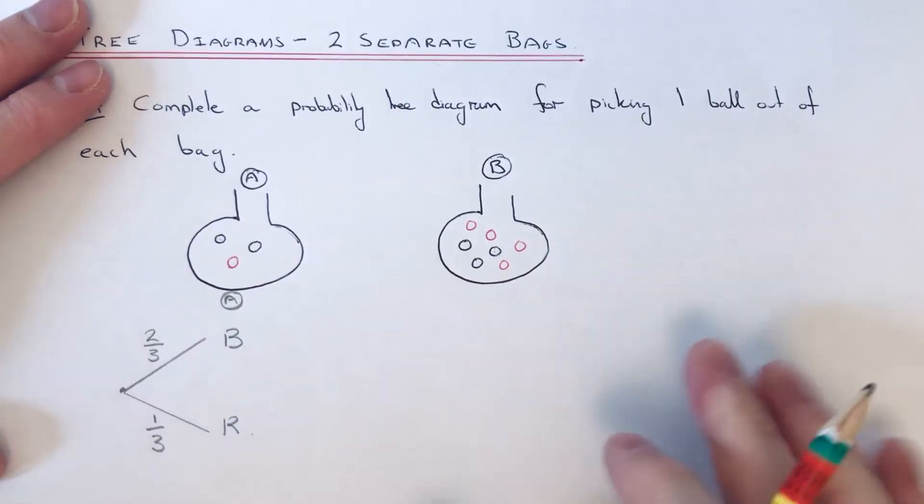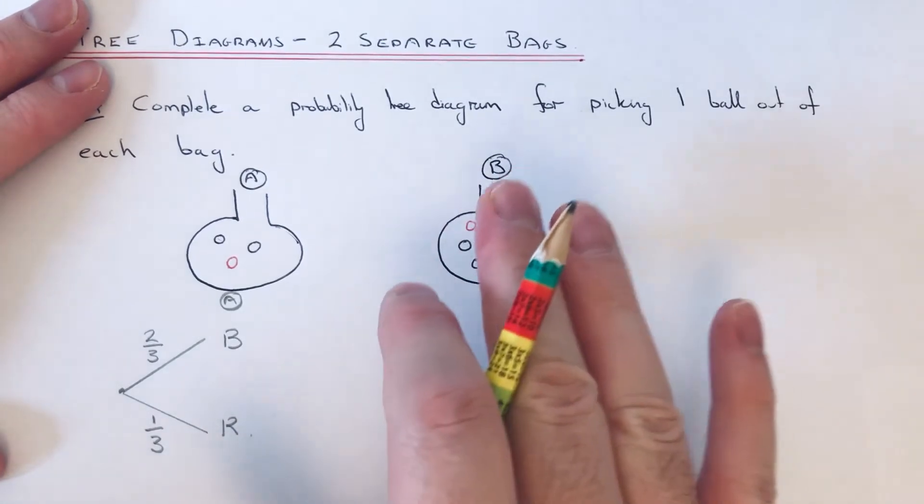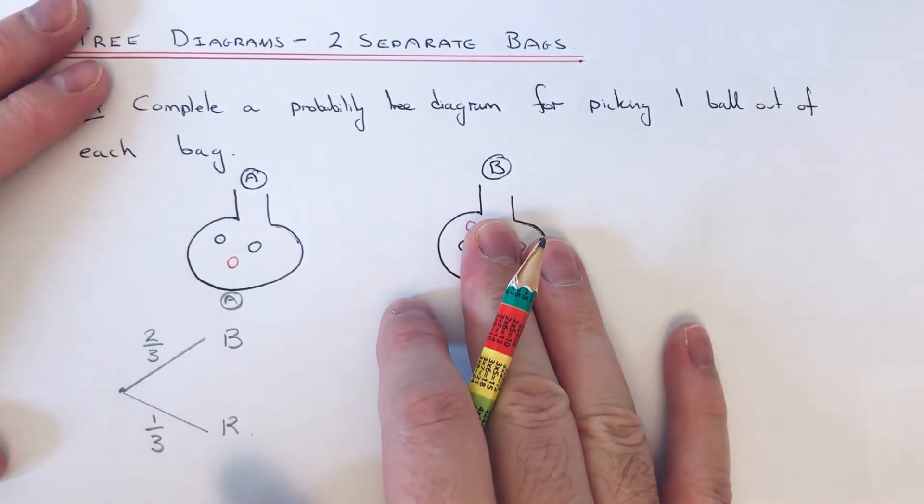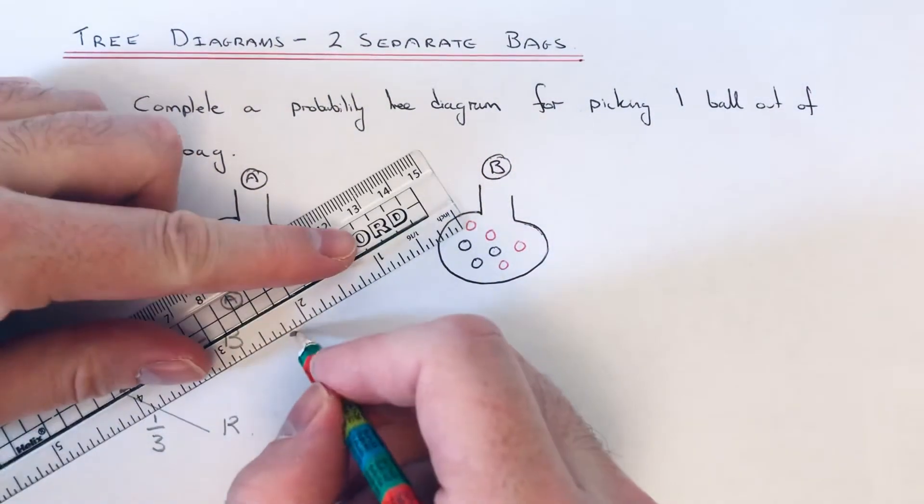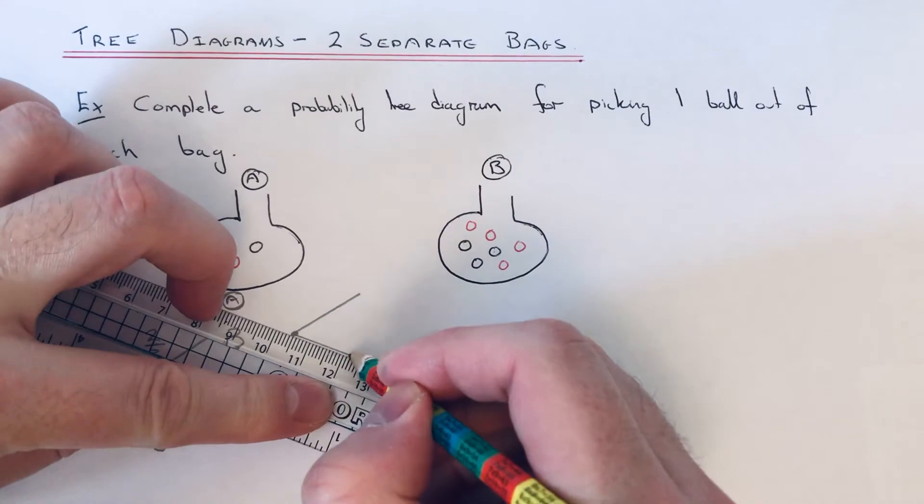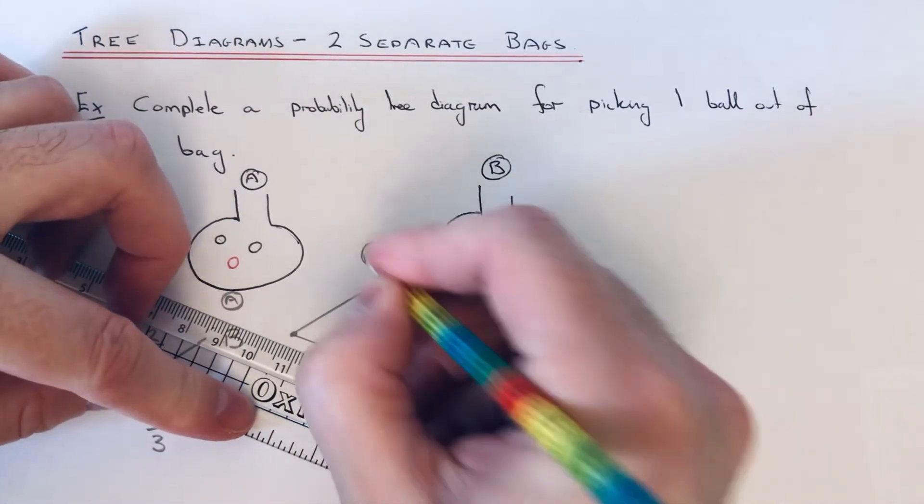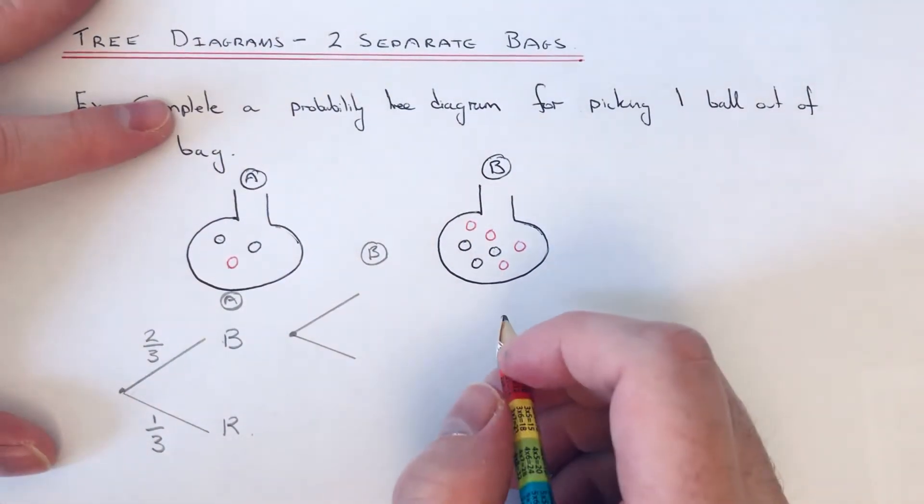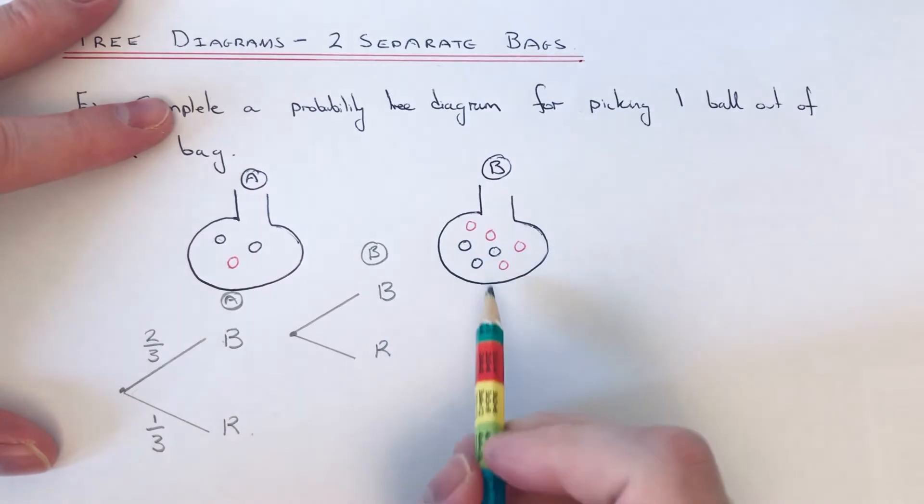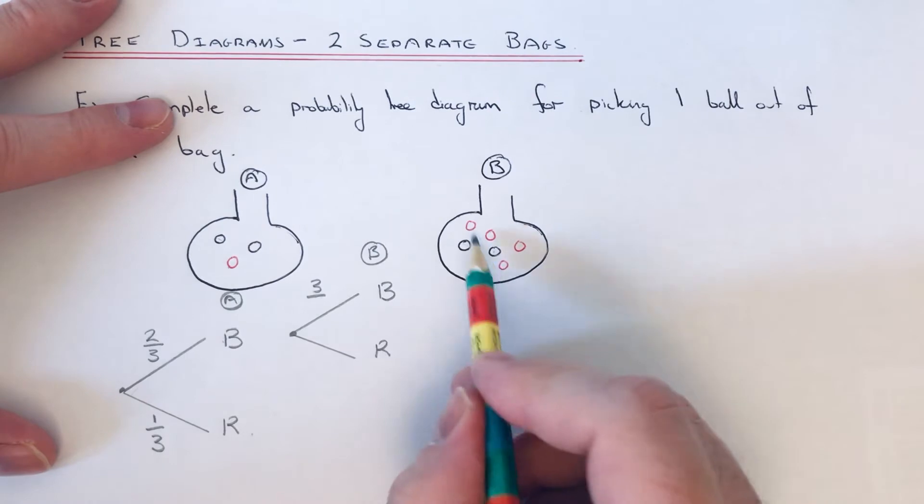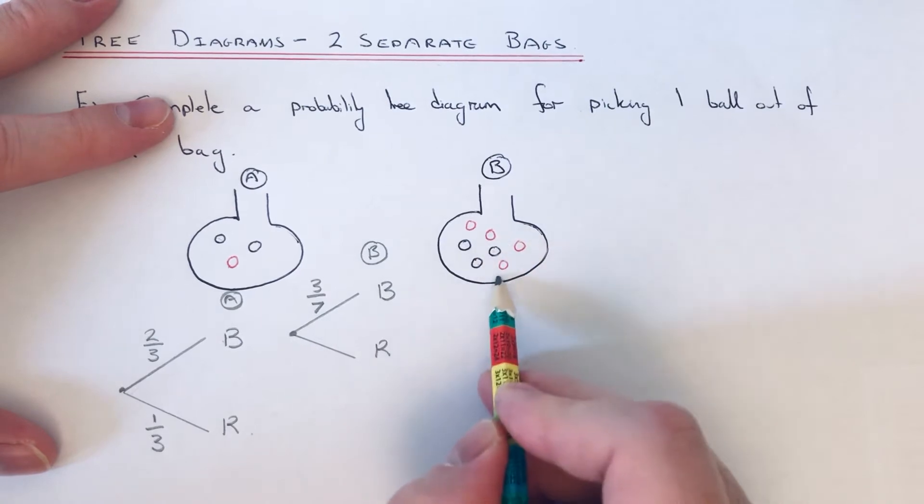So we then do our second set of branches for bag B. So I've picked out a black first of all, so I'm then going to pick another ball out of bag B this time. At bag B I can pick again, I can pick a black or a red ball. So the probability of a black will be three out of seven, and the probability of a red would be four out of seven.